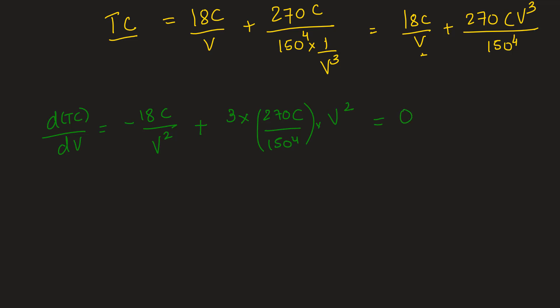This has to be equated to 0 in order to minimize the total cost. Further solving, taking C common and dividing to the other side, we get: [3×270/150^4]V^2 - 18/V^2 = 0.